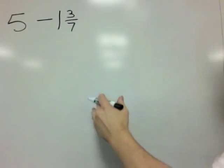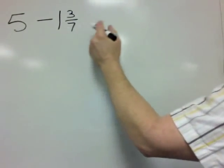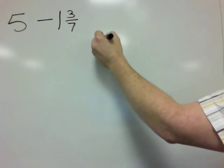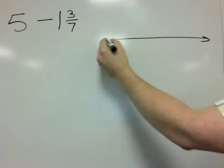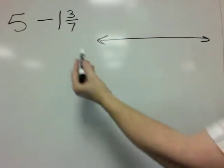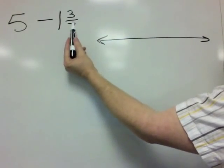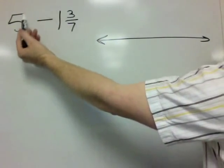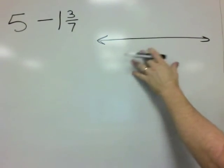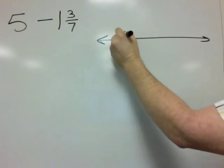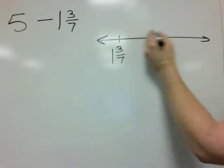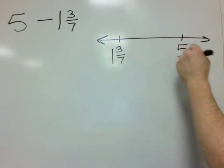In this example, we're going to do the same thing — we're going to use a number line. We want to figure out what do I have to add to 1 and 3 sevenths in order to get to 5. So let's put these two numbers on the empty number line. I'm going to put 1 and 3 sevenths here, and somewhere over to the right is going to be 5.